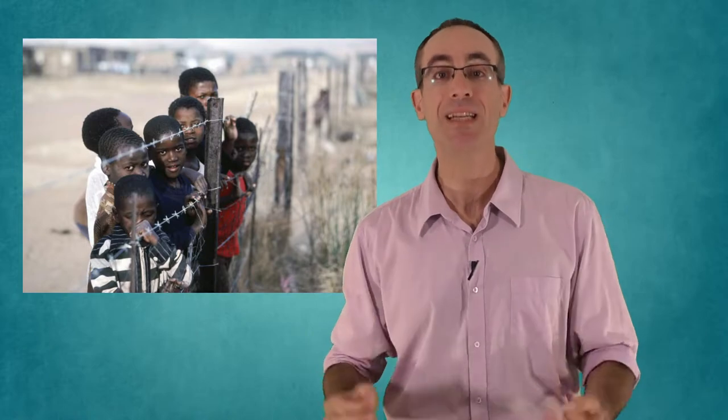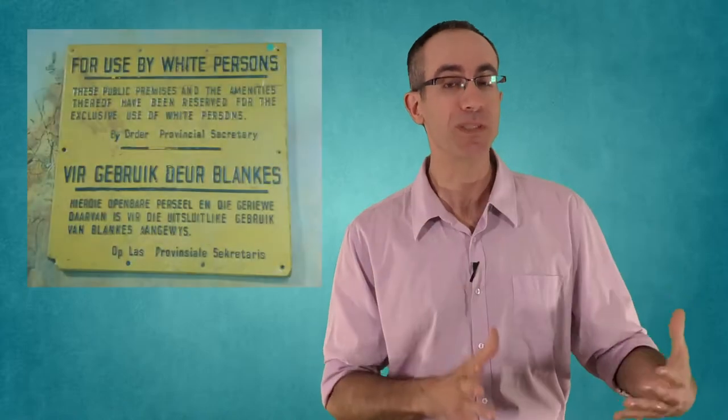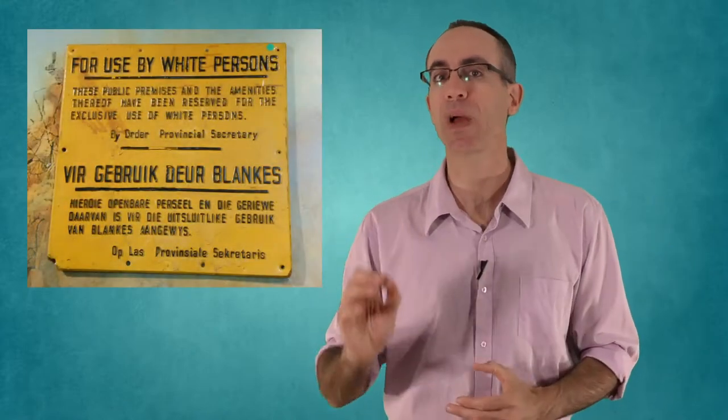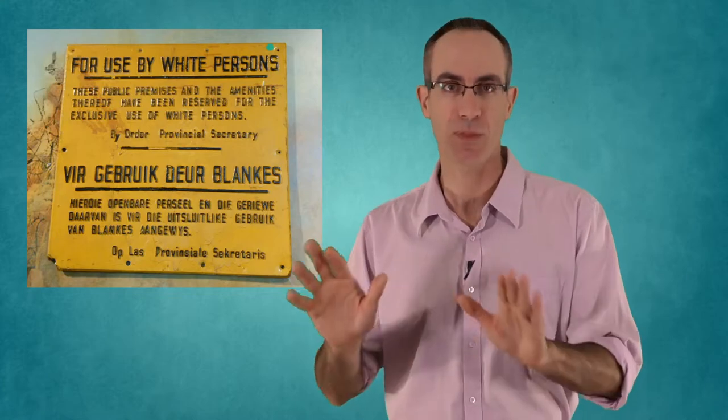But ridiculous as these Bantustans were, they were extremely efficient in fulfilling their true purpose, which was to legally divide and rule the black population. This way, the white minority enjoyed the best of both worlds. By integrating with the blacks only economically, the whites made sure that they wouldn't have to do all the hard work in the mines and the fields or even clean their own homes. And by excluding the blacks politically, the whites got to have a democracy just for themselves.